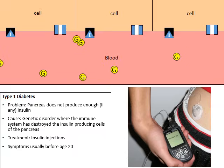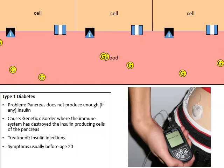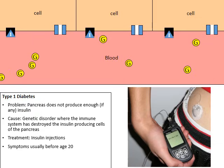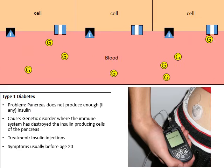Type 1 diabetes is usually what's referred to as an early onset disorder, because it develops earlier in the person's life, typically around the age of 20 or so.